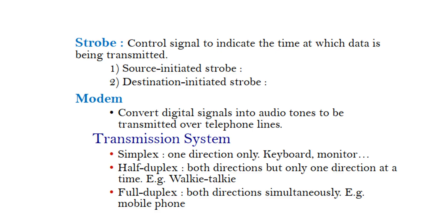Modem: Converts digital signals into audio tones to be transmitted over telephone lines. Transmission system types: Simplex — one direction only (e.g., Keyboard to Monitor). Half Duplex — both directions, but only one direction at a time (e.g., walkie-talkie). Full Duplex — both directions simultaneously (e.g., mobile phone).